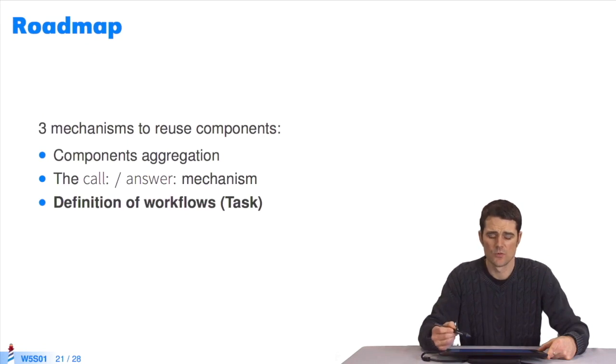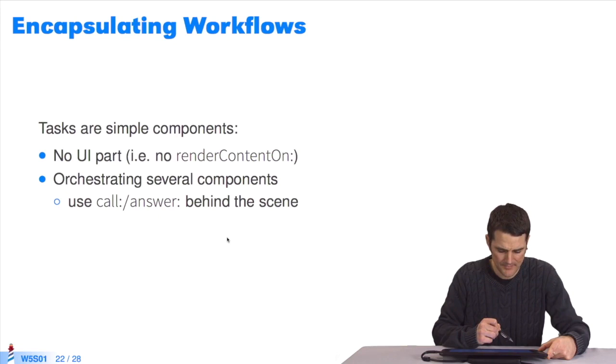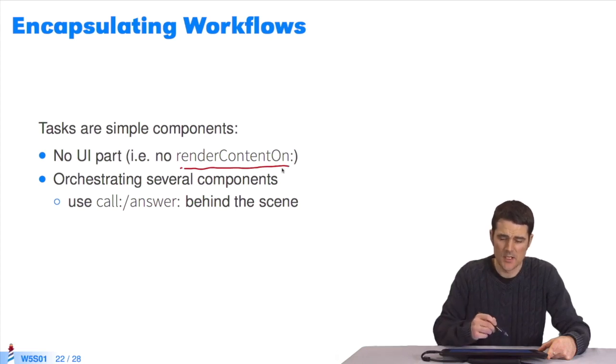We've seen the call-answer mechanism. Now we'll see one last component composition mechanism, the task mechanism. It's actually very simple. Tasks are like components, but there are no UI parts, so no renderContentOn, no generation of HTMLs. The idea is really to orchestrate, to describe how the components should perform over time. This component will do this first, then that one, using call-answer behind the scenes.